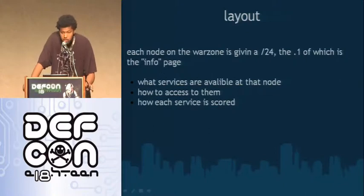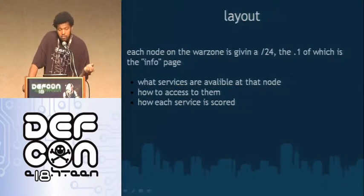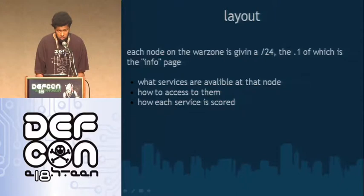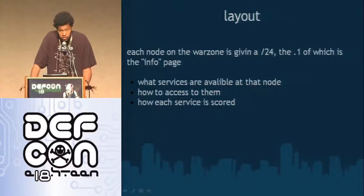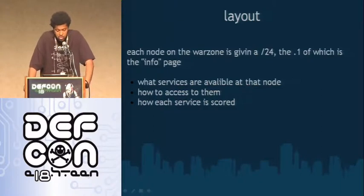The layout of the network is: each node on War Zone is given a slash 24 and the dot-one of that slash 24 is your info page. If you're on a node and you decide you want to go play somebody's game, you look up the giant directory and, say, PS1 is hosting some game — you go to their dot-one and there's a web page that has all of the services they're hosting, how to play, how to score, and the ins and outs of whatever their challenge may be. This dot-one gateway is the only part of each node that's not malicious — this is the portion where you find out how to play, not the portion that attacks you.